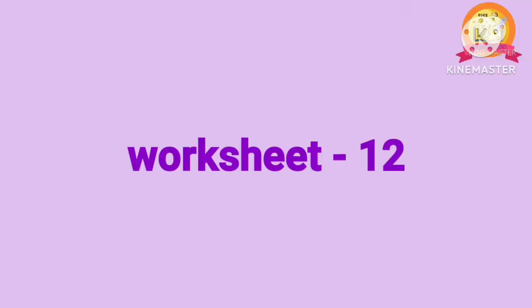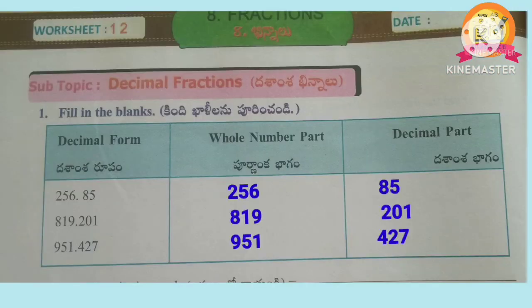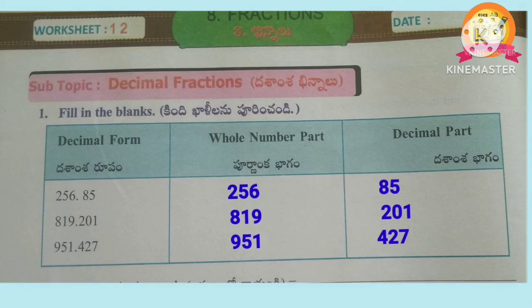Worksheet 12. First Roman: Fill in the blanks. Decimal fractions are given; write the whole number part and decimal part in the table. 256.85: whole number part is 256, decimal part is 85. 819.201: whole number part is 819, decimal part is 201. 951.427: whole number part is 951, decimal part is 427.